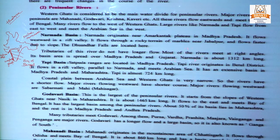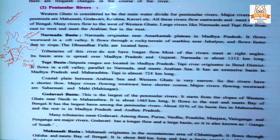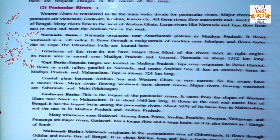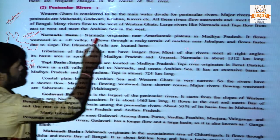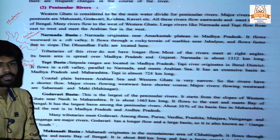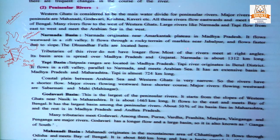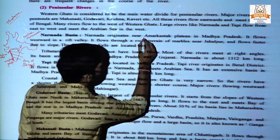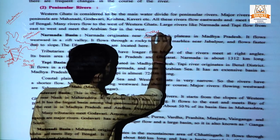What you have to remember about the Peninsular River: most rivers originate from the Western Ghats. Most rivers flow eastward and meet the Bay of Bengal. Only two rivers — Narmada and Tapi — flow westward and meet the Arabian Sea. Narmada originated near Amarkantak plateau in Chhattisgarh. The textbook mentions Madhya Pradesh, but Amarkantak is originally in Chhattisgarh — correct this.